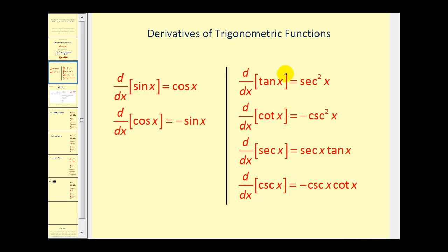We pretty much have to memorize these. One way that can help is to remember that tan² x + 1 = sec² x, so tangent and secant always go together — you see them paired in those derivatives. Also, cot² x + 1 = csc² x, and whenever you have cotangent you also have cosecant in those derivative formulas.